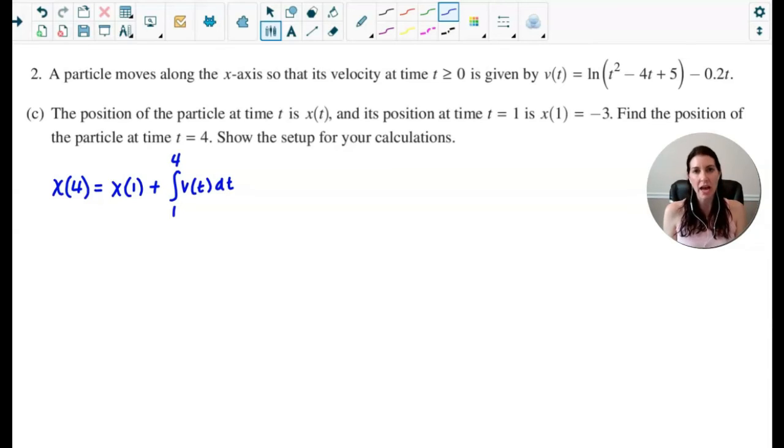And since v(t) is defined, I'll go ahead and just write that in my work. So there is the setup. And so x(1) is going to be negative 3. And so in your calculator, you can do negative 3 plus the integral from 1 to 4, and then we can go ahead and plug in that velocity equation. And when you do that in your calculator, it comes out to be negative 2.803. And so that would be the position of the particle at a time of 4.